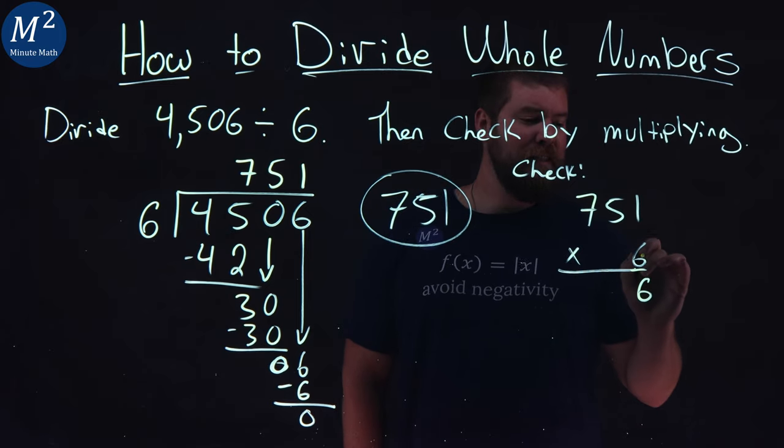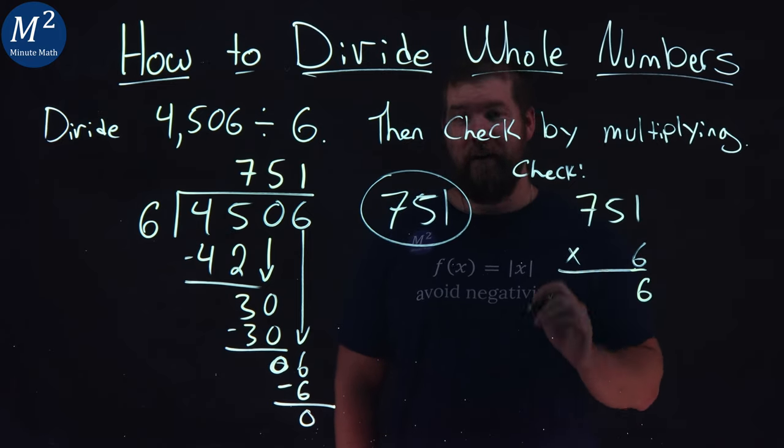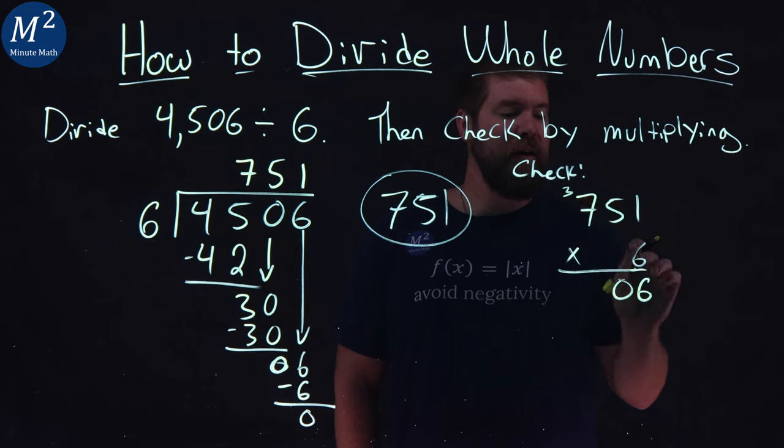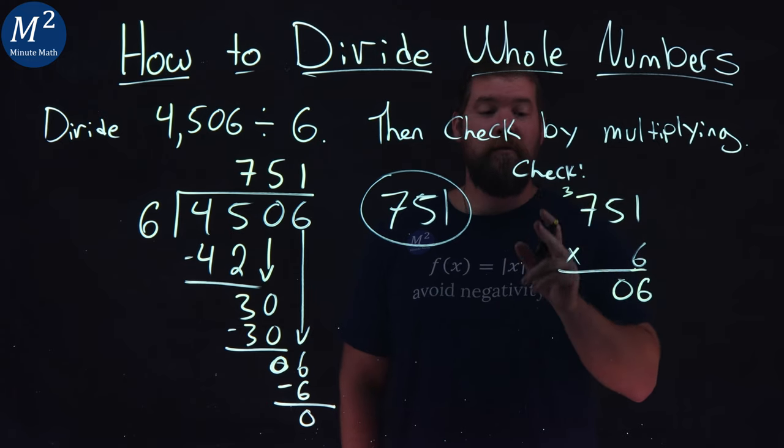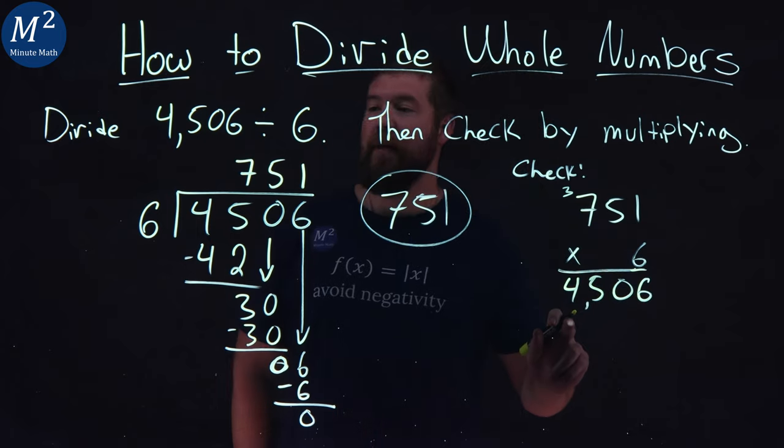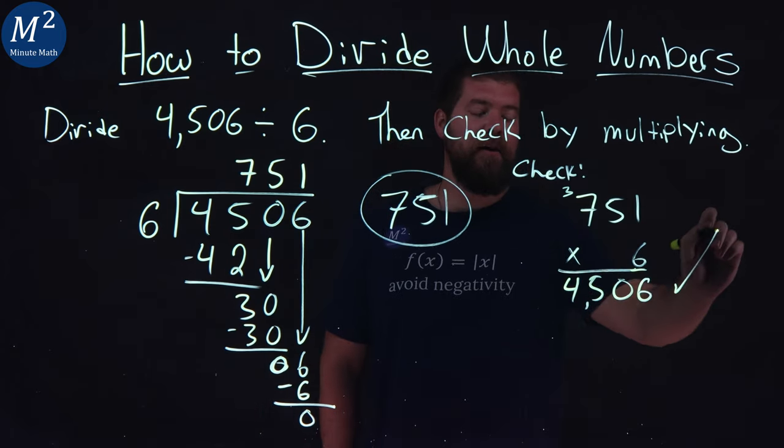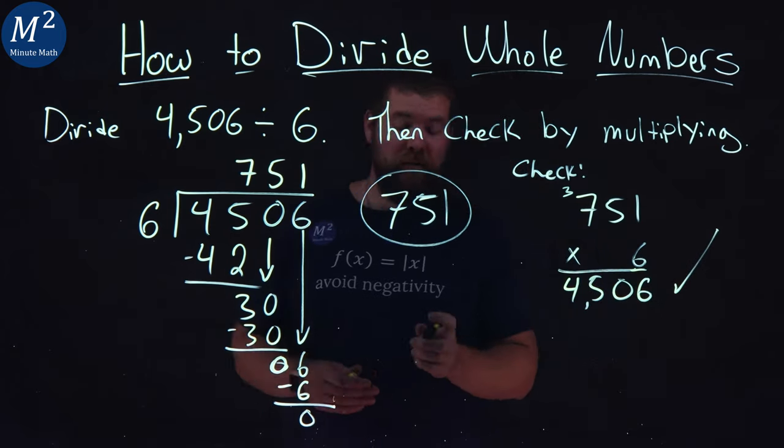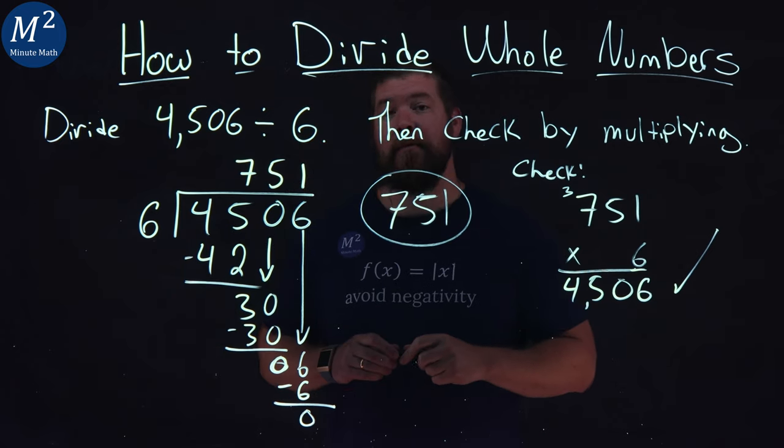6 times 1 is 6 here. 6 times 5 is 30. 0 carries the 3. 6 times 7 is 42, plus 3 is 45. And we got 4,506. Our check works out. And so again, our final answer here is 751.